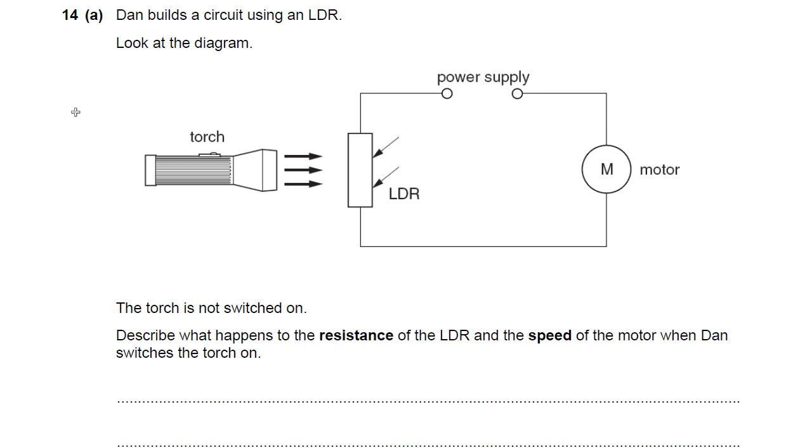This is question 14 in P6 OCR Gateway Physics or OCR Gateway Further Additional Science. Dan builds a circuit using an LDR. An LDR means light-dependent resistor.